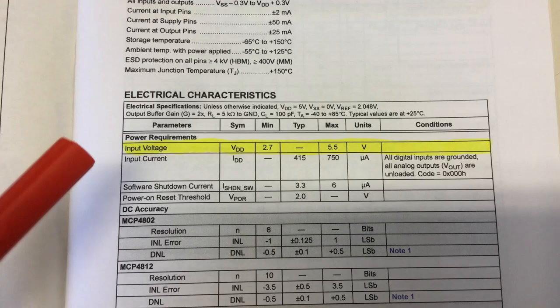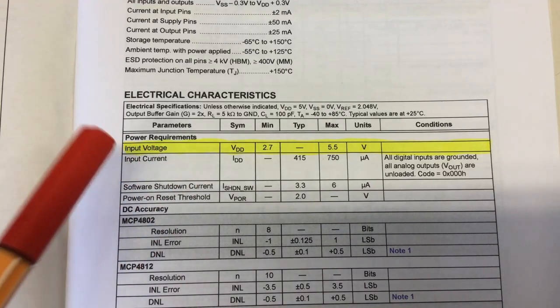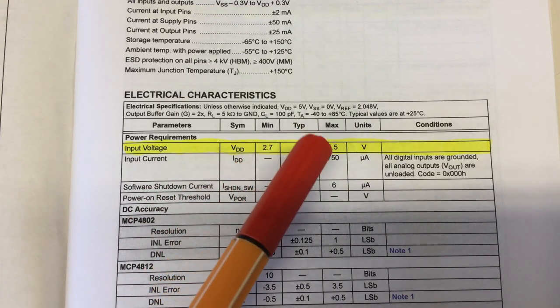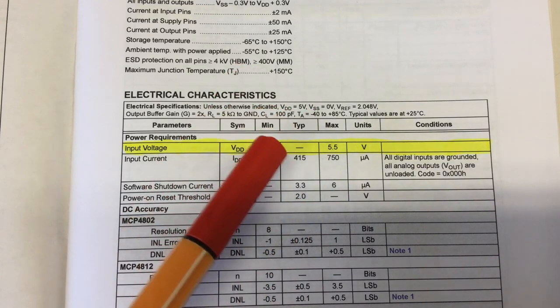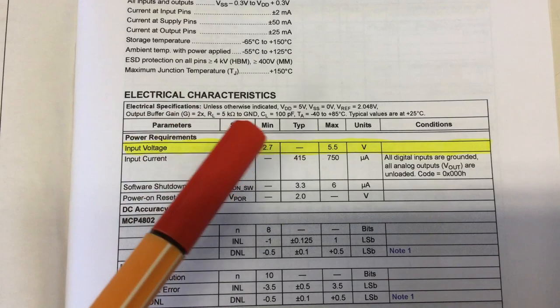Some highlights from the data sheet. So your input voltage or your supply voltage has to be between 2.7 and 5.5 volts. So 5 volt operation, no problem. 3.3 operation, no problem.